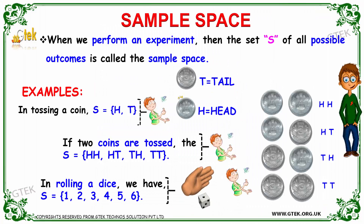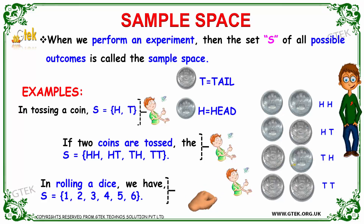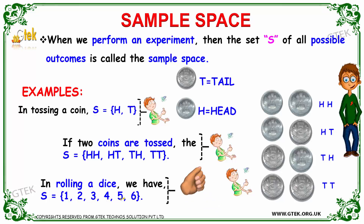We got the sample space as a head or a tail. If two coins are tossed, the sample space is: head-head, head-tail, tail-head, or tail-tail. In rolling a dice, we get the probability outcomes of 1, 2, 3, 4, 5, or 6.